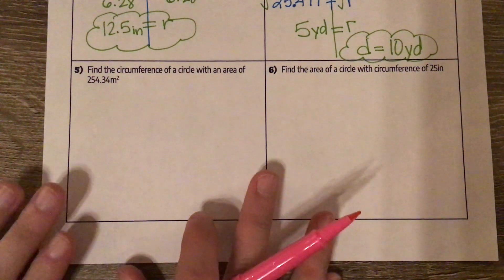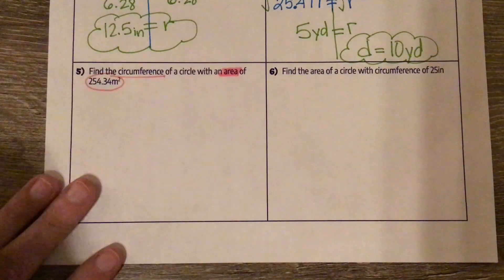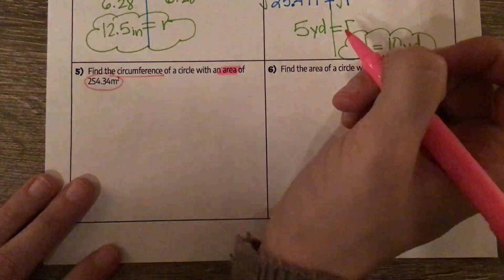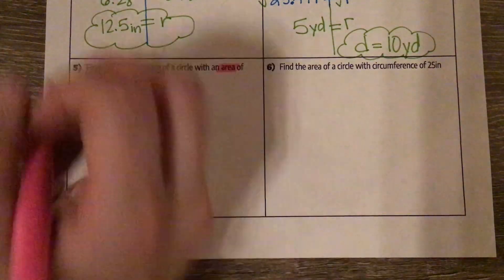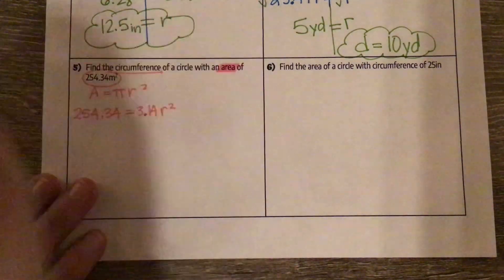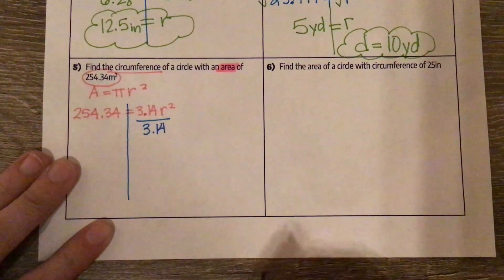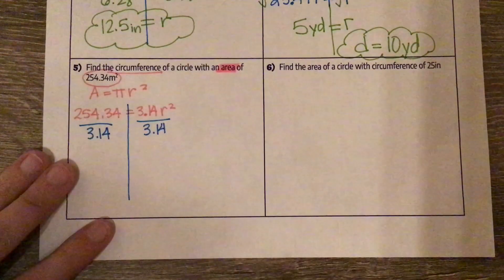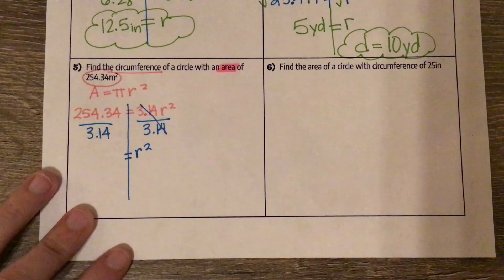Number five: find the circumference of a circle with an area of 254.34 meters squared. We're looking for the circumference and we are given the area. The area only gives us one formula, so that's the one we have to start with: area equals πr². Plugging in what we know, 254.34 equals 3.14 times r squared. R squared is being multiplied by 3.14, so we divide both sides by 3.14. It cancels out, and we're left with r² equals 254.34 divided by 3.14, which is 81.